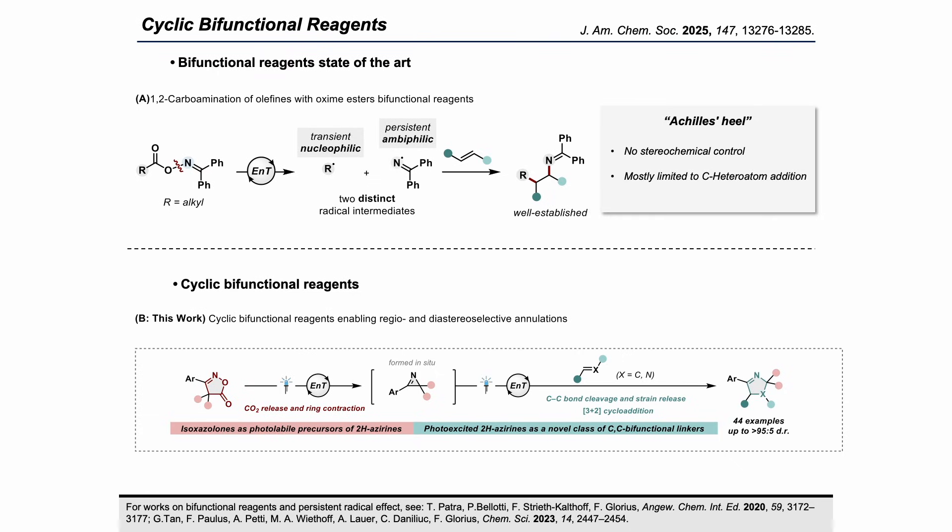The cyclic bifunctionals undergo a first energy transfer, as you see here on the bottom left, to generate an azirine intermediate, which upon a second energy transfer event breaks at the C-C bond to form a Csp2 radical and a Csp3 radical. The different polarity and lifetime of these radical fragments dictate the order of insertion to olefins and other coupling partners to form N-heterocycles in a high degree of regio- and diastereoselectivity.